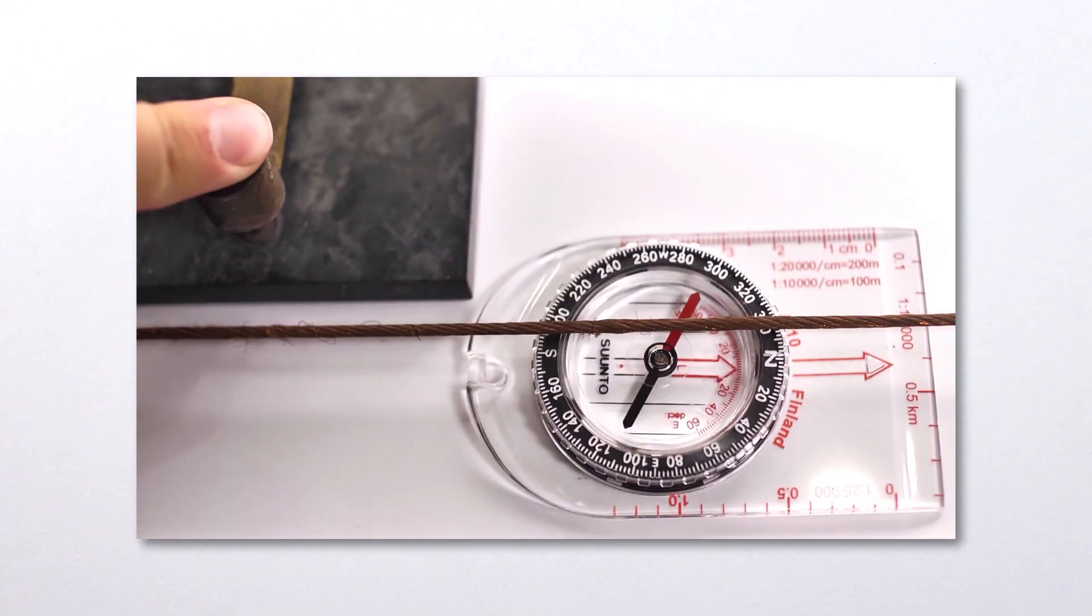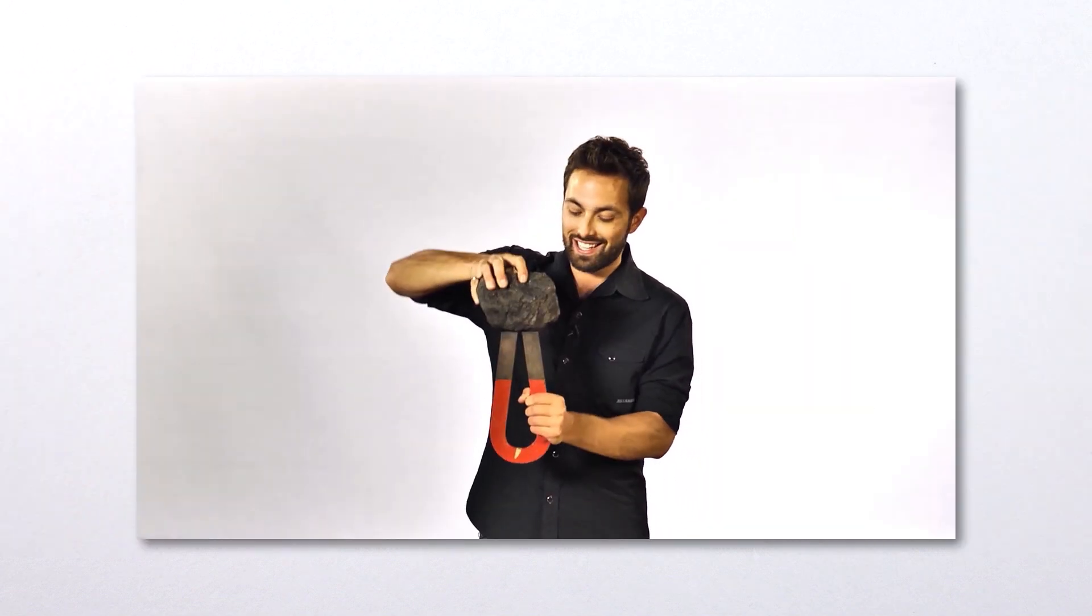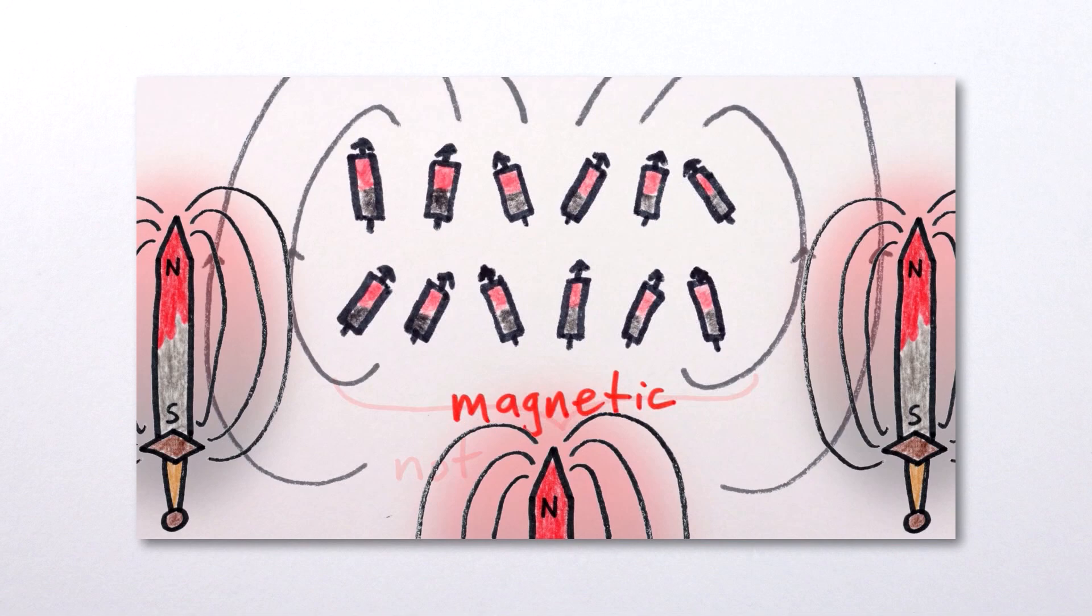Magnets can be created by running currents through wires, by finding a suitable material that naturally has all the magnetic fields of its atoms aligned, or by forcing the magnetic fields of atoms to align.